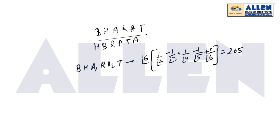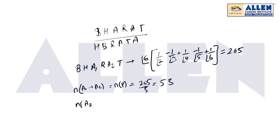अब उन cases को देखते हैं जब a1, a2 के place पर आ गया हो। उन सारे sets को N(P) बोलते हैं, जब a1, a2 की जगह आए। ऐसे total आएंगे 53 arrangements. इसी तरह a2, a1 की जगह आए, उसे N(Q) मानते हैं - यह भी same, 53 आएंगे।